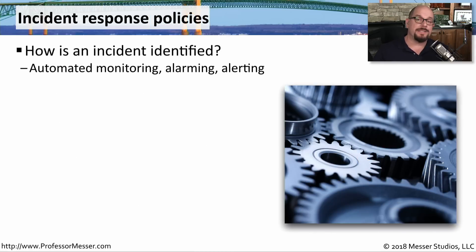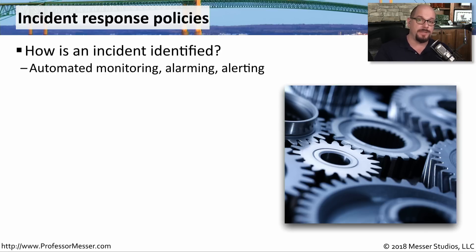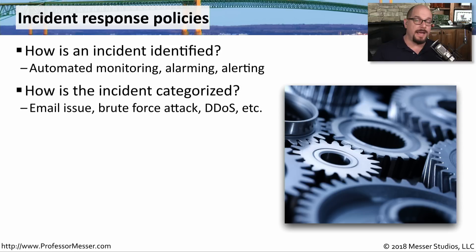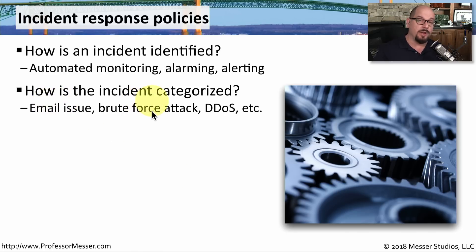The security policies looking for these incidents should first start with how you would identify one of those incidents in your organization. There should be an automated monitoring system constantly looking for these types of security issues. You want to be able to alarm if an issue is discovered and alert all appropriate people who need to react. Each type of attack will obviously need a different type of response — your processes and procedures should already know how to handle different categories of attacks. An email issue, for example, may be handled very differently than a brute force attack.